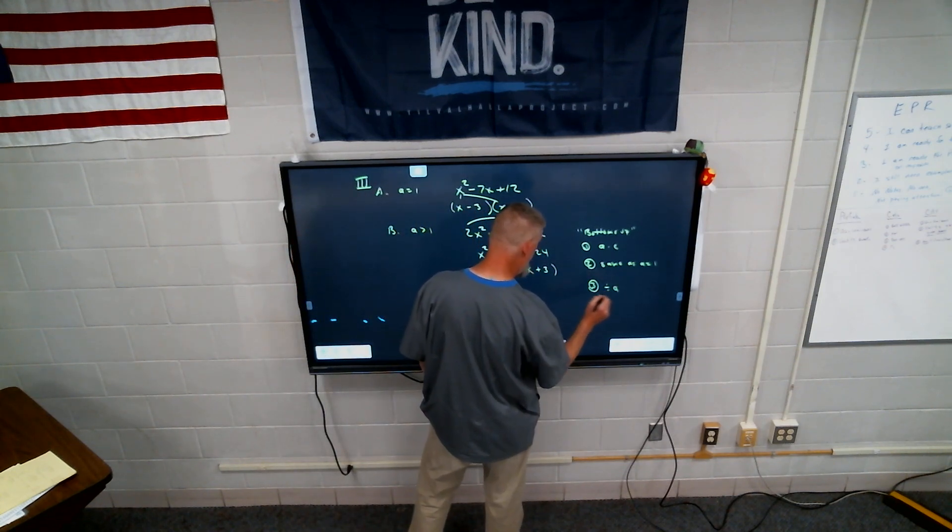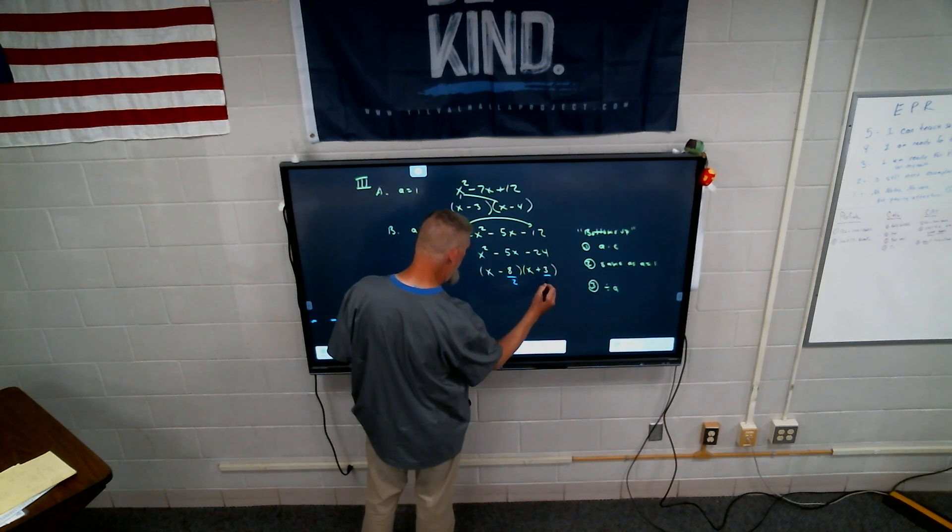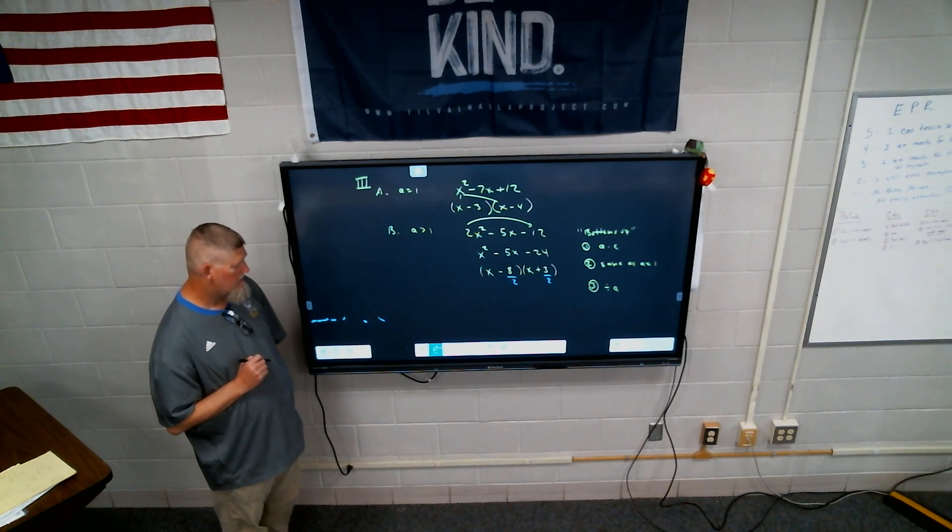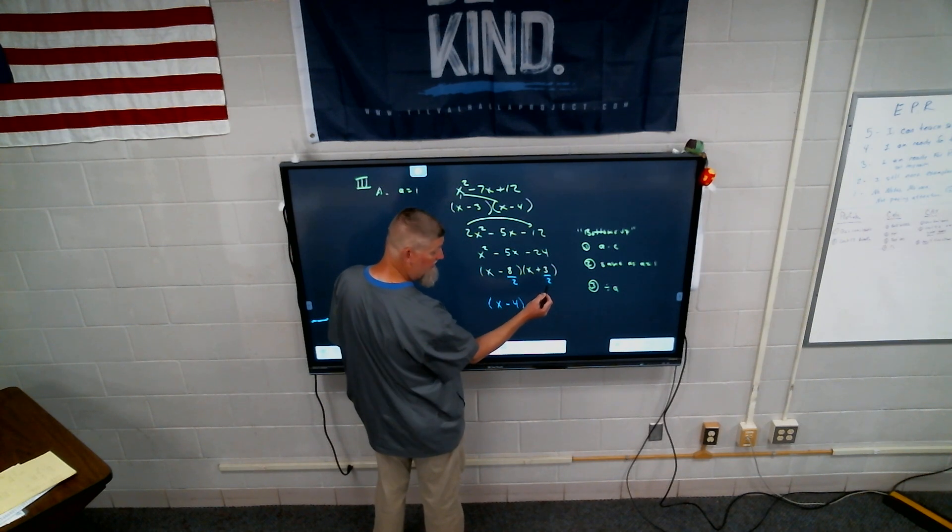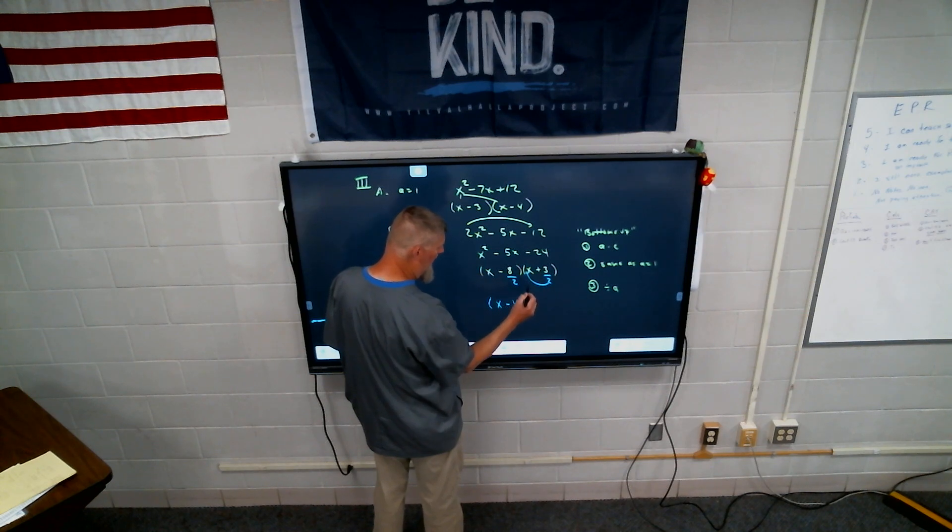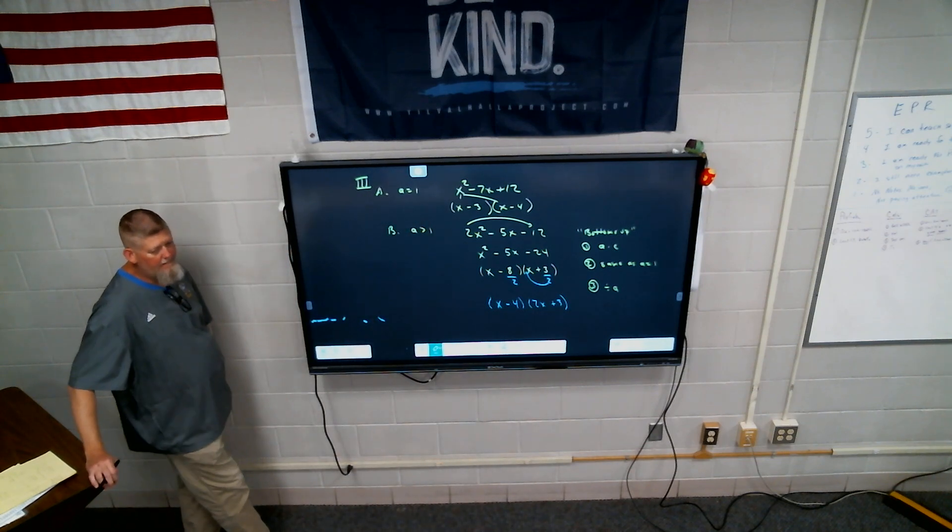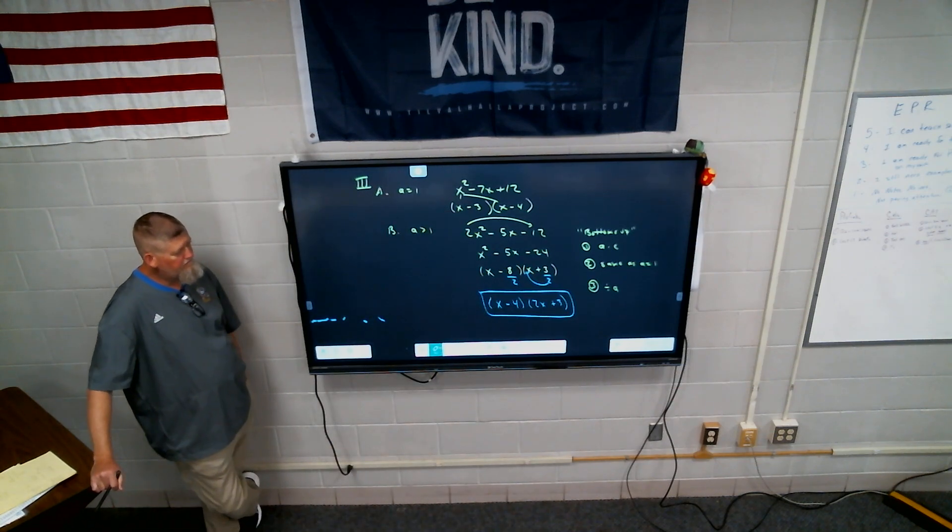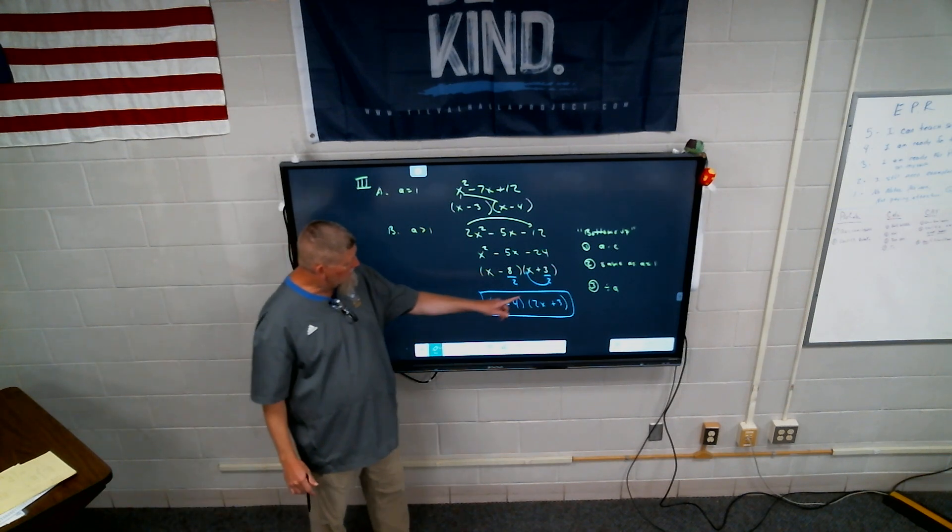Number three. You have to divide by a. So that means I have to take this value of a, and come back here and divide here by two, and here by two. So your final answer would be x minus four, and then x plus three over two. Well, then, this is why it's called bottoms up. You bring the bottom up. And it's two x plus three. This is my favorite one. There's your answer. It's so simple. Because every step makes sense.